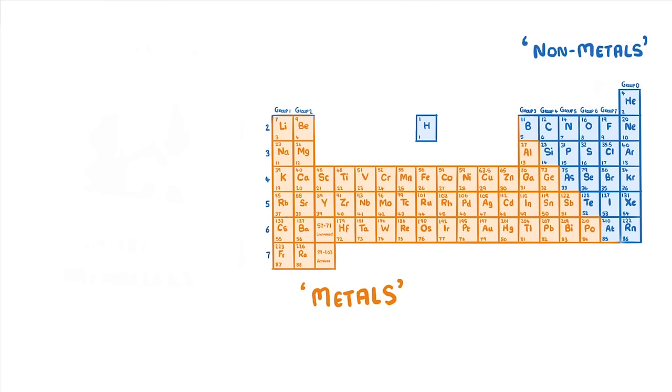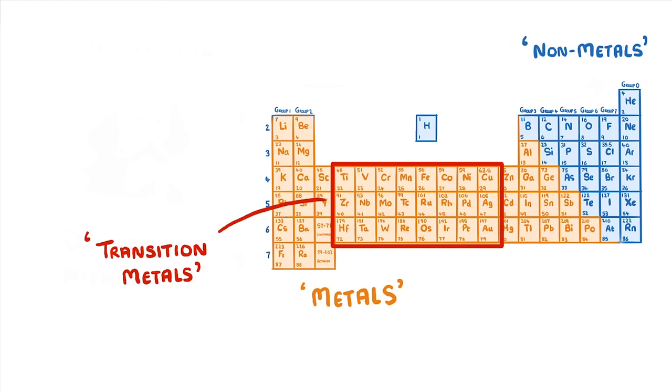And in the middle of the metals, there's a special block of elements, which are known as transition metals. We'll take a closer look at what these are in another video. Just like we'll take a closer look at the group 1, group 7, and group 0 elements, and the differences between metals and non-metals.